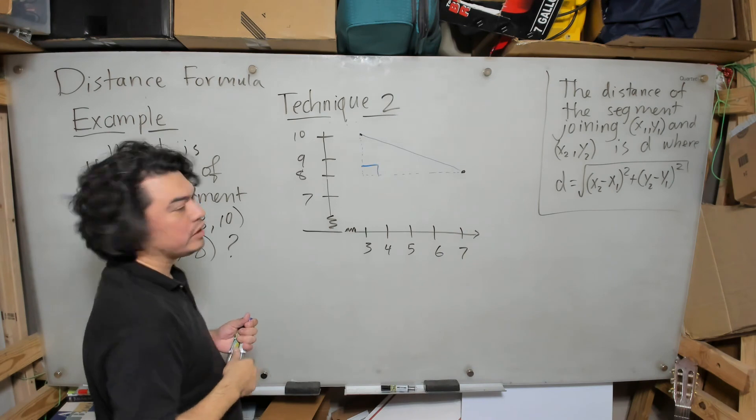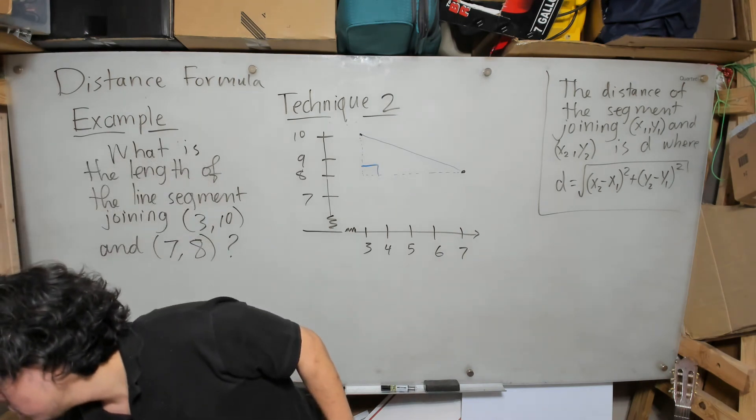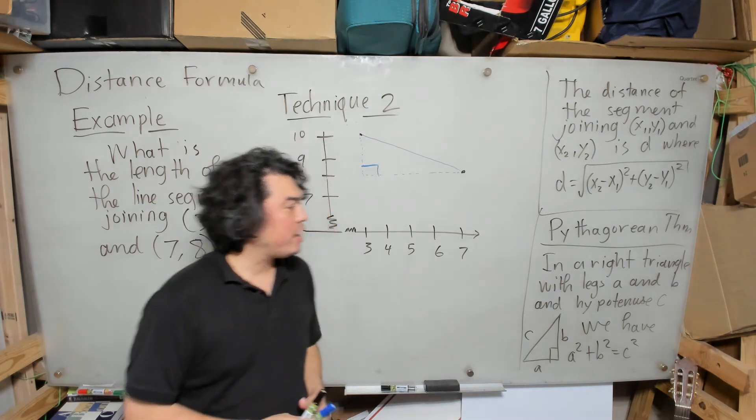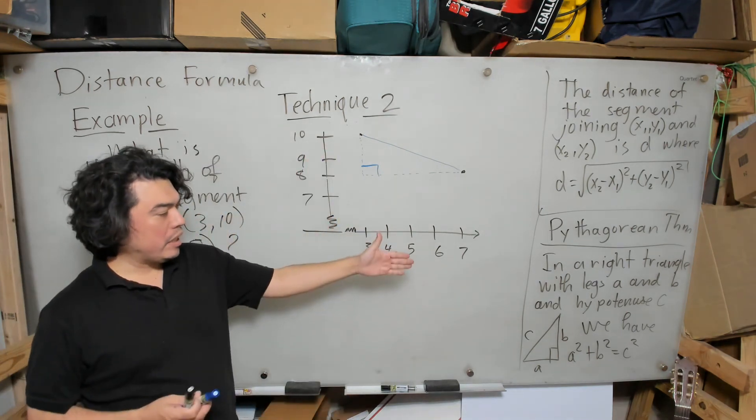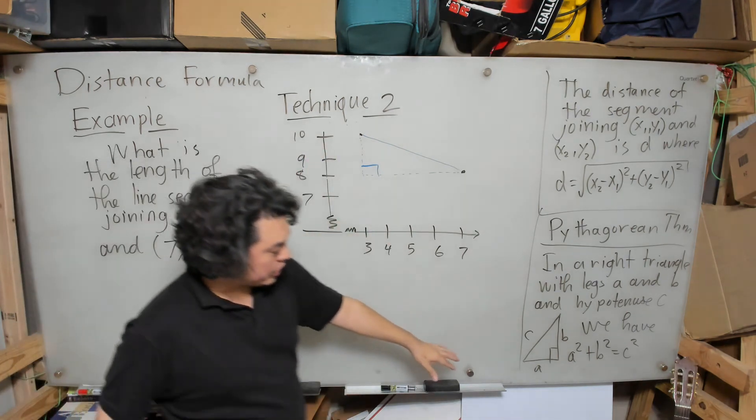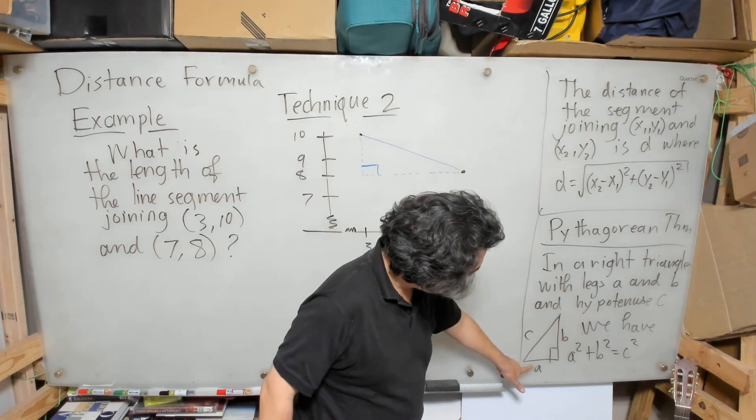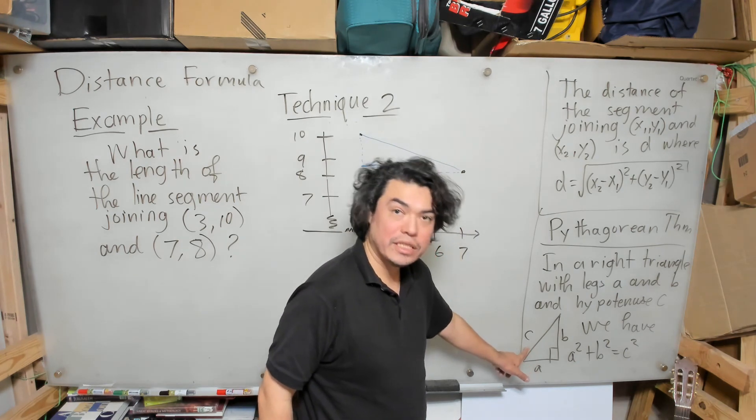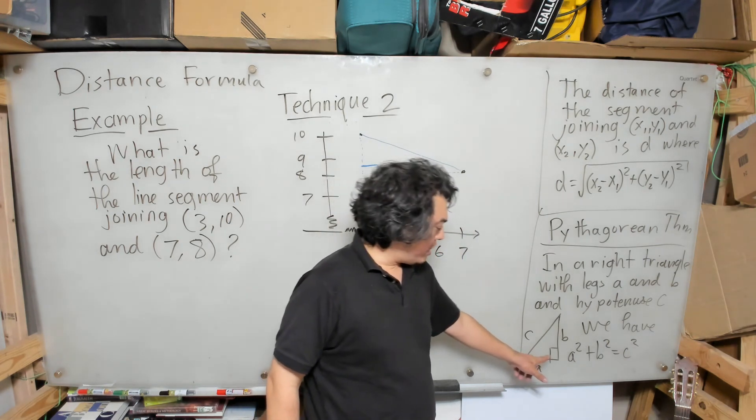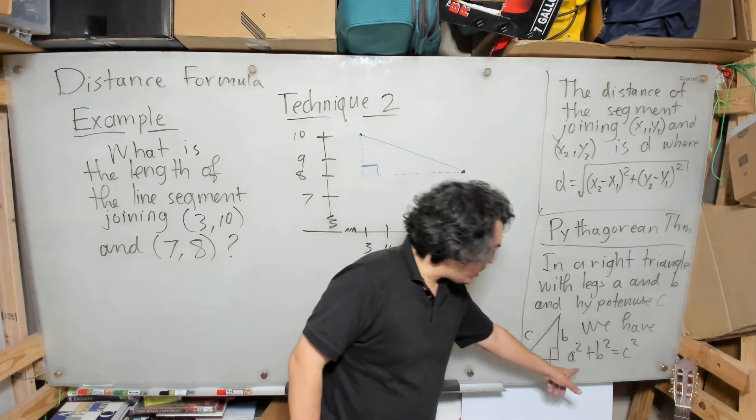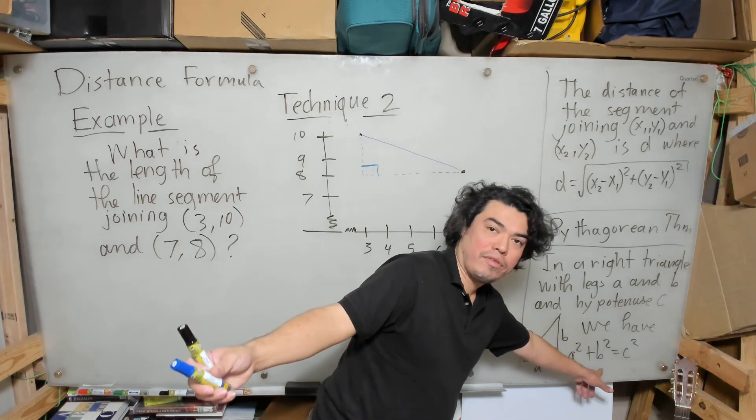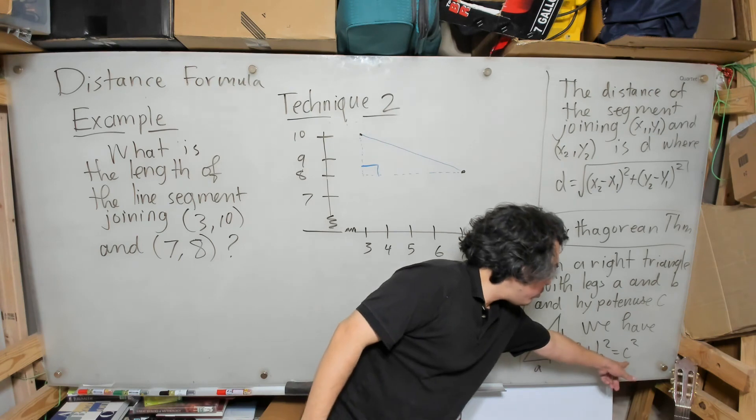We remind ourselves of the Pythagorean theorem: in a right triangle with legs a and b and hypotenuse c, we have leg a, leg b, and hypotenuse c. The hypotenuse is always the segment that is across from the right angle. Then we must have the relationship that a² plus b², the sum of the squares of the legs, must equal c², which is the square of the hypotenuse.